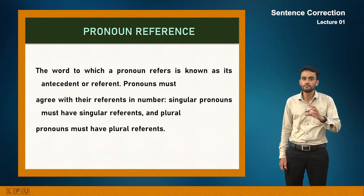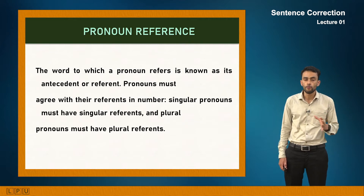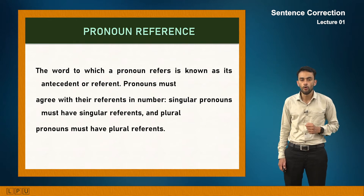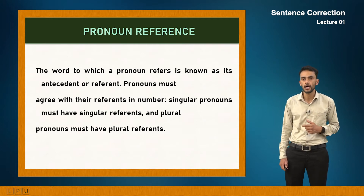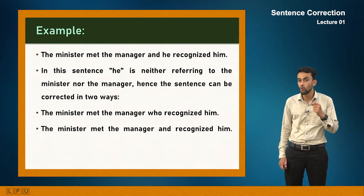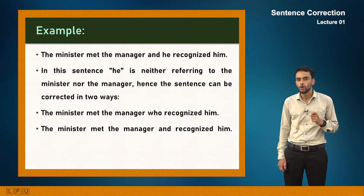Your pronoun must agree with its reference in number — a singular pronoun should have a singular reference and a plural pronoun should have a plural reference. For example, you can't say 'people are responsible for his or her mistakes'; it should be 'their mistakes.' Consider this example: 'The minister met the manager and he recognized him.' Here it is unclear whether 'he' refers to the minister or the manager — that is a pronoun reference error.